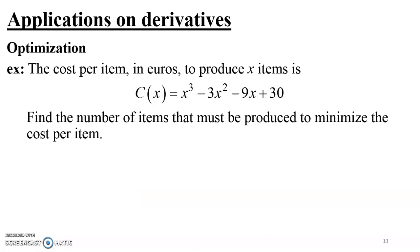In this lesson we're going to be tackling one of the applications of derivatives, which is optimization. To optimize something is the same as maximizing or minimizing it — finding optimal solutions, finding where that quantity is in fact minimum or maximum. For example, in this first exercise, the cost per item in euros to produce X items is given by C of X equals a cubic polynomial, and we need to find the number of items that must be produced to minimize the cost per item.